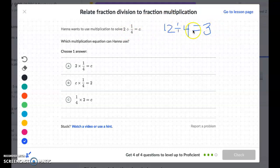And if I want to use multiplication to solve this now, I can see this a little bit better because I can say it's just three times four equals twelve. So it's c times one-fourth equals two.